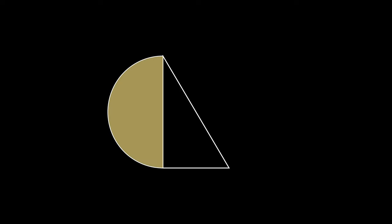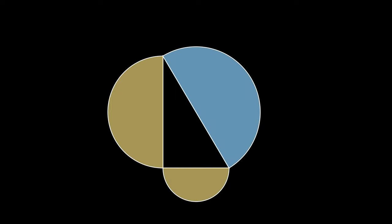Suppose we have a right triangle, and off each of the legs we have a semicircle with diameter equal to the leg of the triangle. Furthermore, imagine a semicircle that has a diameter along the hypotenuse.